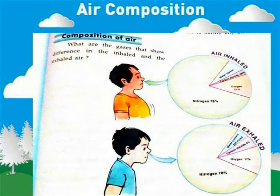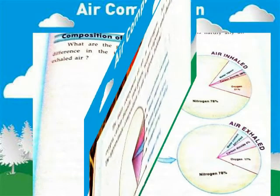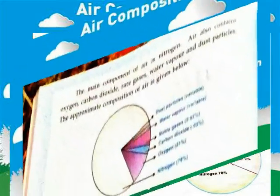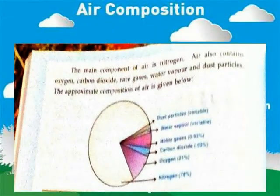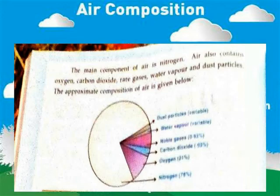What are the gases that show difference in the composition of air? The main component of air is nitrogen. Air also contains oxygen, carbon dioxide, rare gases, water vapour, and dust particles. The approximate composition of air is given in the diagram below.